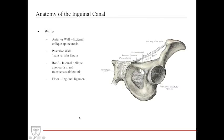The walls of the inguinal canal: the anterior wall is composed of the external oblique aponeurosis; the posterior wall is composed of the transversalis fascia; the roof is composed of the internal oblique and the transverse abdominis, as mentioned with the conjoined tendon; and the floor is the inguinal ligament, which is again the external oblique.